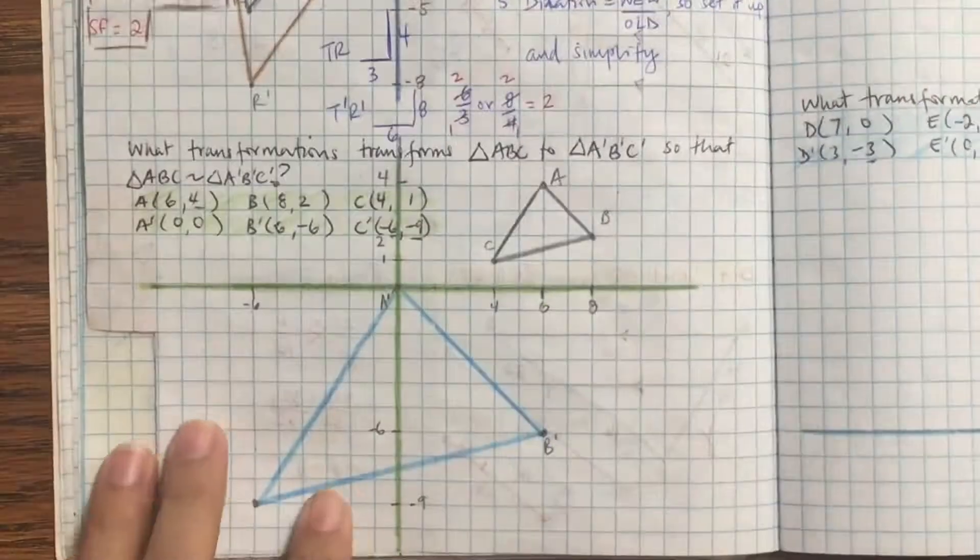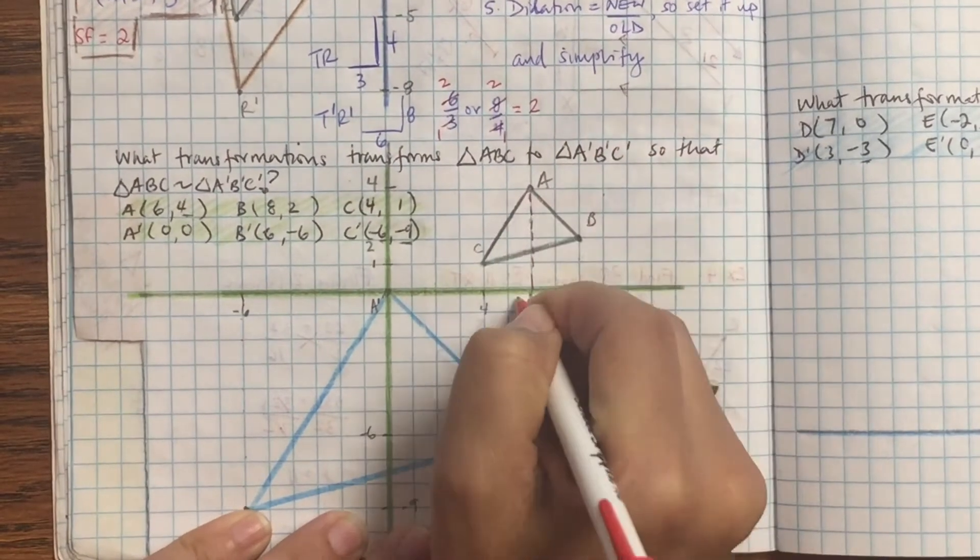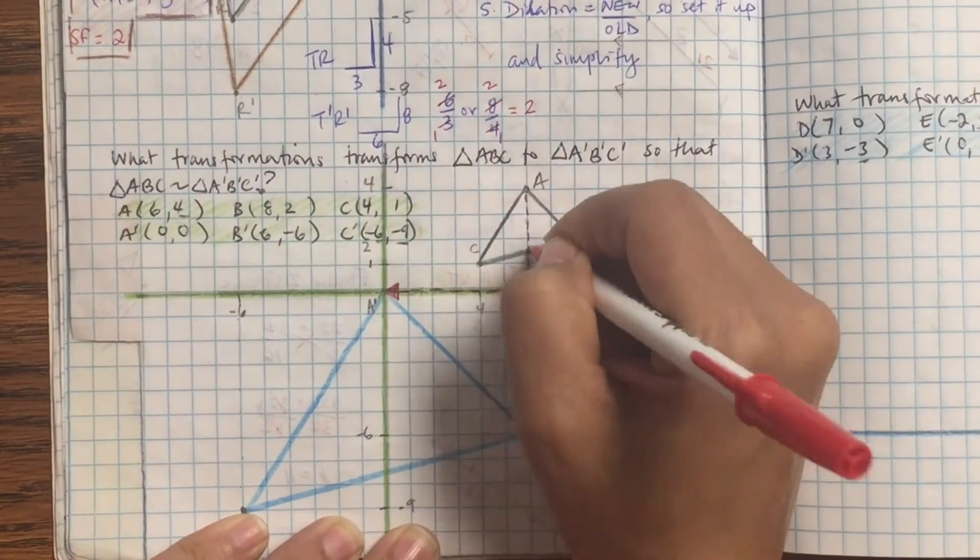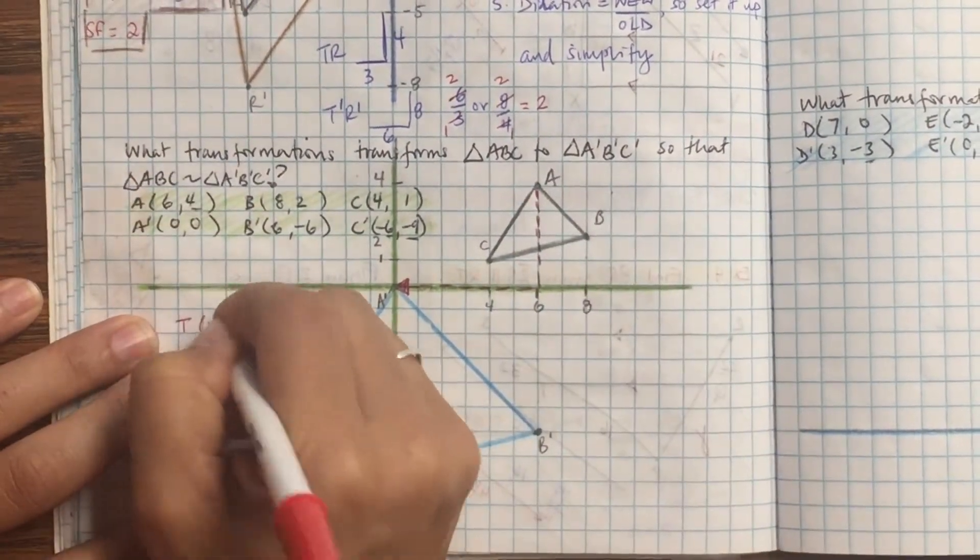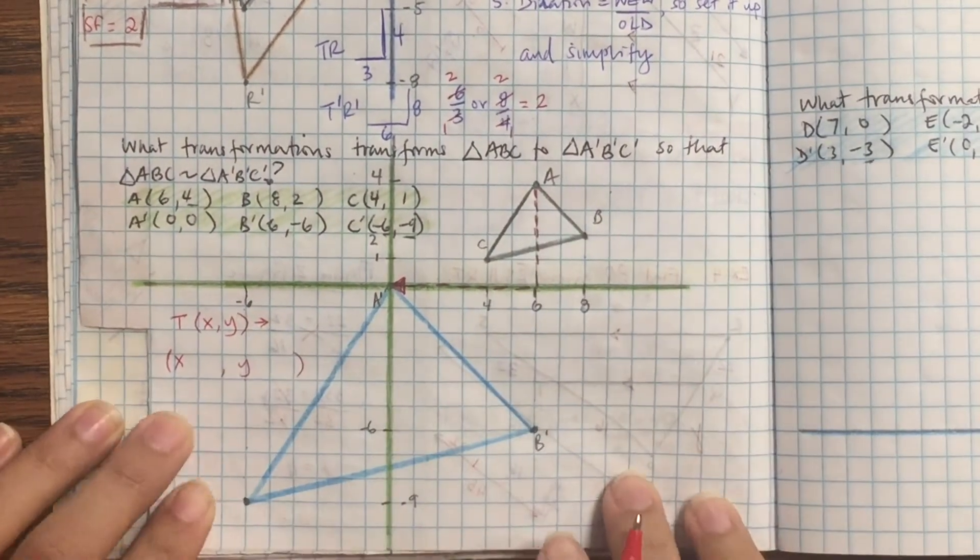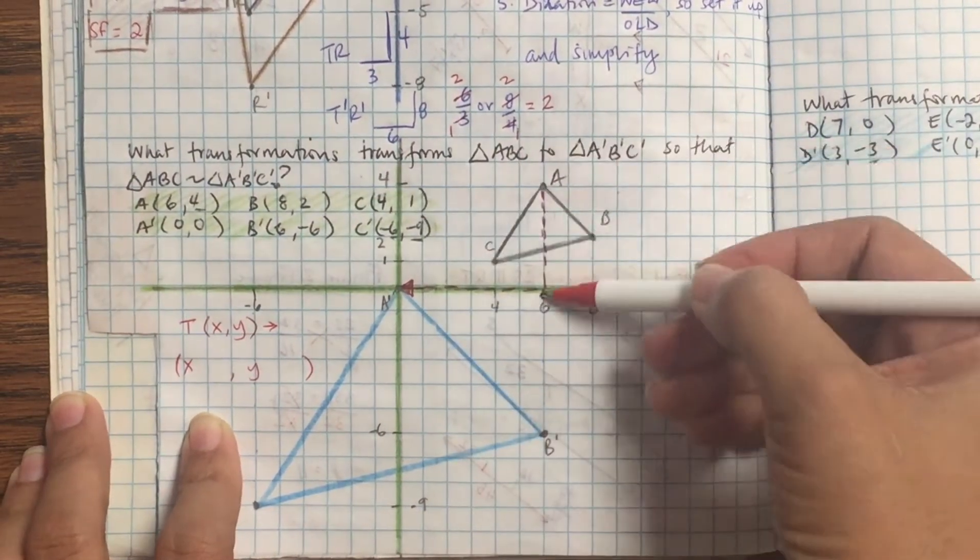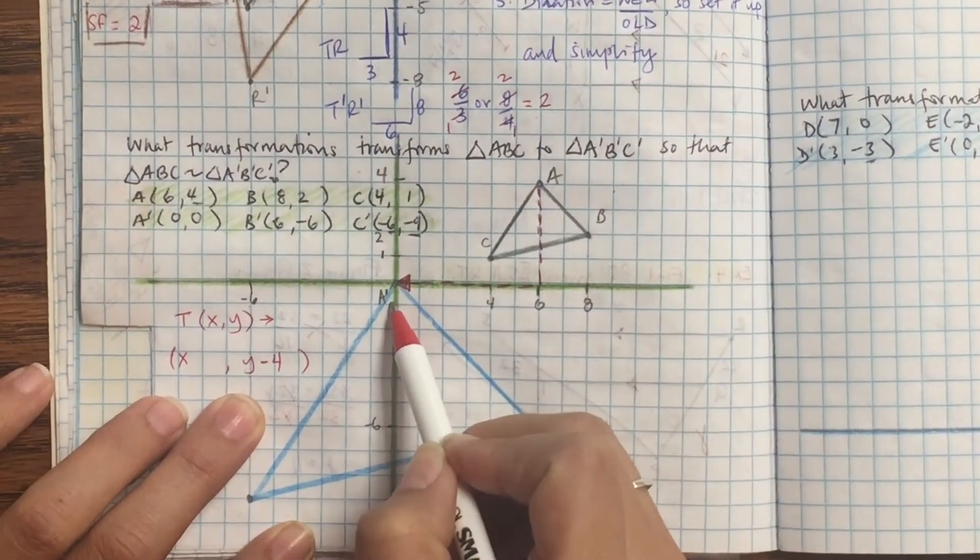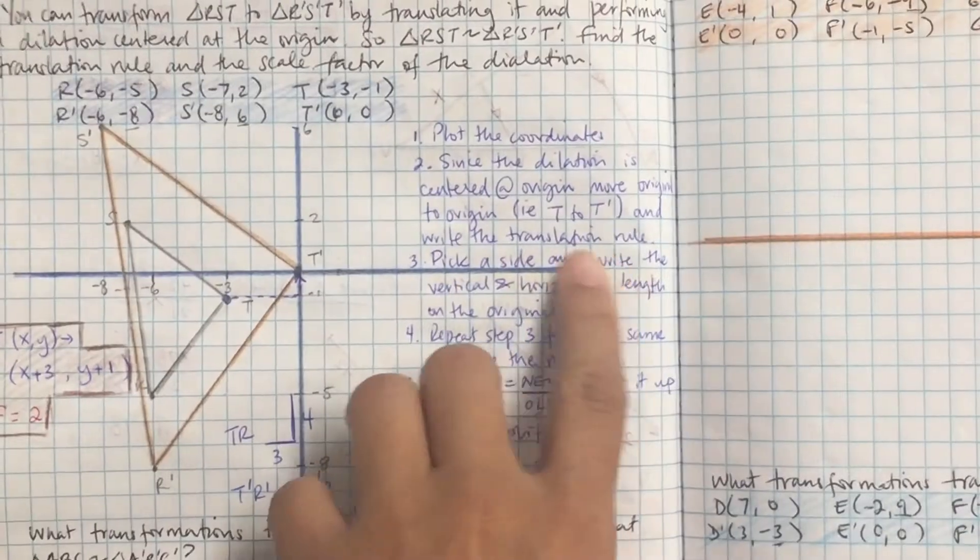So in order to get the original to that's transformed, what did we do? We translated it and made it bigger. So let's figure out how we translated it. So pick a point and see how it got there. How did A get to A prime? We are going to go down 4 and left 6. And you can count it out or you can use the numbers. Translation rule is x minus 6 and y minus 4.